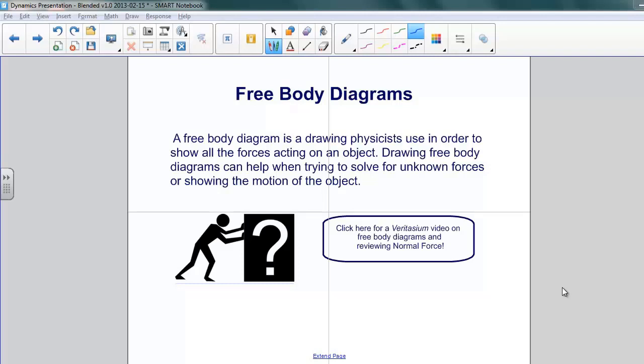A free body diagram is a drawing that physicists use in order to show all the forces acting on an object. Drawing the free body diagram can help when trying to solve for unknown forces or showing the motion of an object.